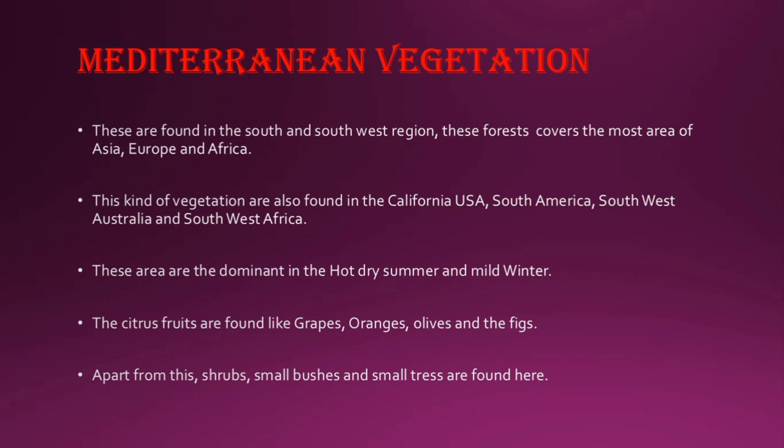Because of the hot dry summer conditions, citrus fruits are found here like grapes, oranges, olives, and figs. Shrubs, small bushes, and small trees are particularly found here, making these very rich regions in terms of Mediterranean vegetation.